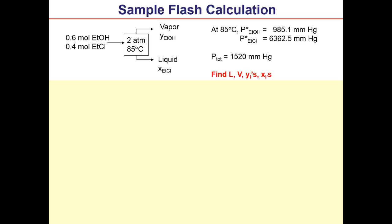Let's do a sample flash calculation with two compounds: ethanol (compound 1) and ethyl chloride (compound 2). The flash is at 2 atmospheres and 85°C. At 85°C, the vapor pressures are known from Antoine equations or tables. The total pressure is 1520 mmHg, which equals 2 atmospheres. We want to find the liquid molar flow rate L, the vapor molar flow rate V, and all the yᵢ's and xᵢ's.